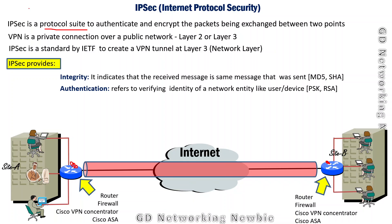IPSec also provides authentication. Authentication refers to verifying the identity of network entities like users or devices. We want to authenticate that the sender is really the one from whom we were expecting — like the answer to the question 'who are you?' To prove identity, we can use PSK (pre-shared key) or RSA algorithm to authenticate the users.